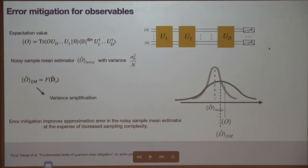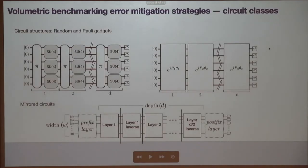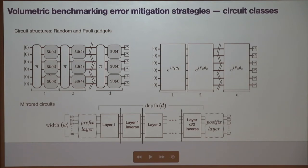Now let's look at how these things work in practice. We'll consider a couple of circuit classes as tests for these methods. First, random circuits — similar to circuits used in quantum volume experiments, with layers of randomly chosen two-qubit gates. Second, Pauli gadgets, where each layer is the exponentiation of a Pauli operator selected randomly with some phase — these are the kind of circuits that appear in dynamical simulation because Trotterized circuits look very similar.